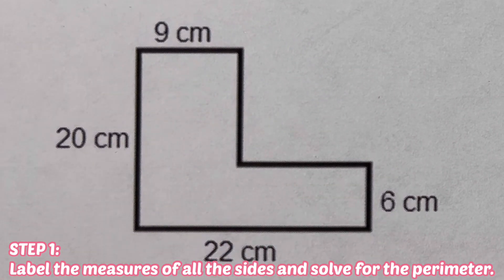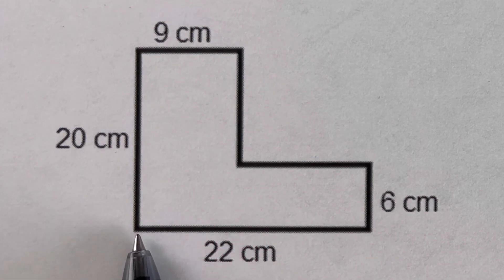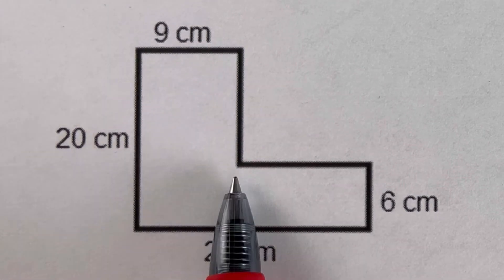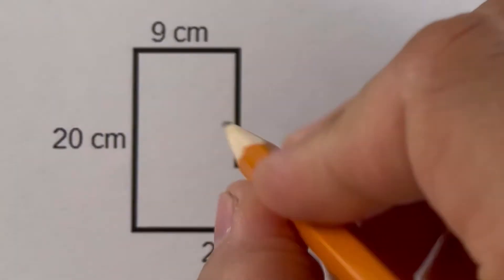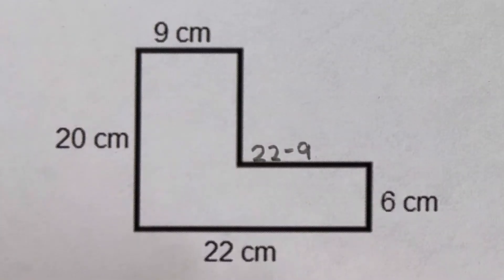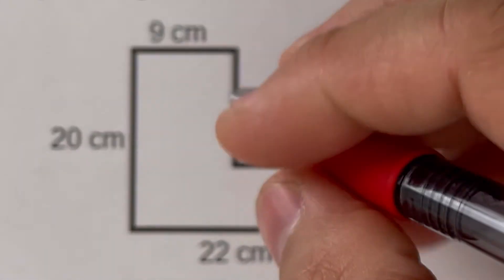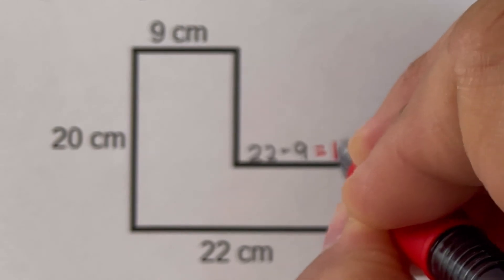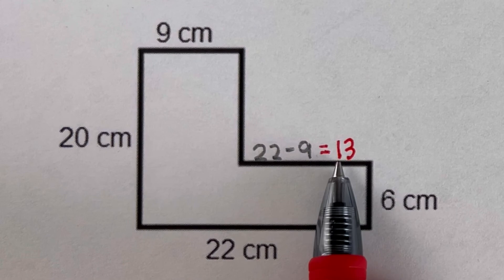We are missing two sides before we can solve for the perimeter. This whole length is 22 and this side is 9, so this missing side would be 22 minus 9. Showing the work on the side: 22 minus 9 equals 13. So this length from this point all the way to this point is 13.